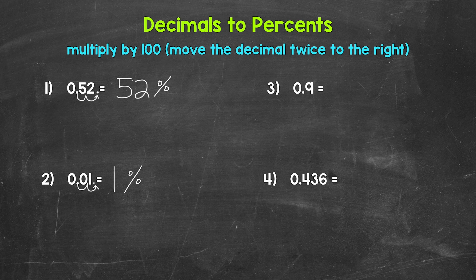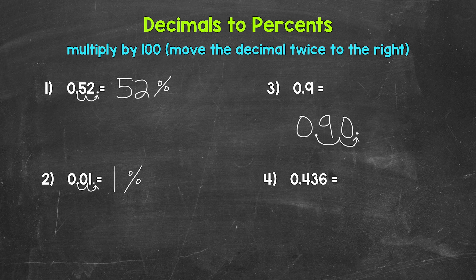Let's move on to number three, where we have 0.9 — nine tenths. I'm going to rewrite this decimal underneath because we're going to need a little more room for this one. So let's multiply by 100 by moving the decimal once, twice, to the right. So we have a gap there — we need to fill that place with a zero. So our percent here is 90 percent. Nine tenths equals 90 percent.